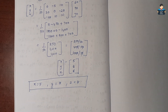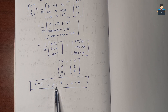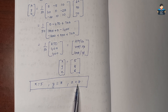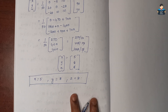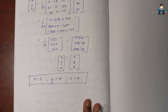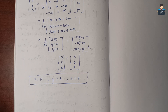So the cost of onion per kg is Rs. 5, cost of wheat per kg is Rs. 8, and cost of rice per kg is Rs. 8. This sum's video is complete. Next video will cover miscellaneous exercise sums. Please like, share, and subscribe. Thank you.